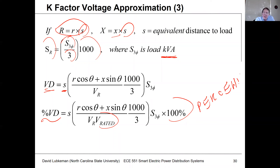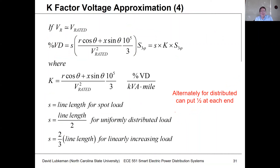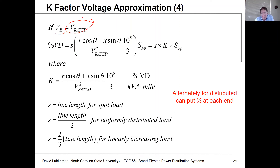Note that without the 100%, dividing through by the rated voltage gives a per-unit value. To fully linearize, we can't have the value of VR in the denominator, so we assume that VR is approximately equal to V-rated.